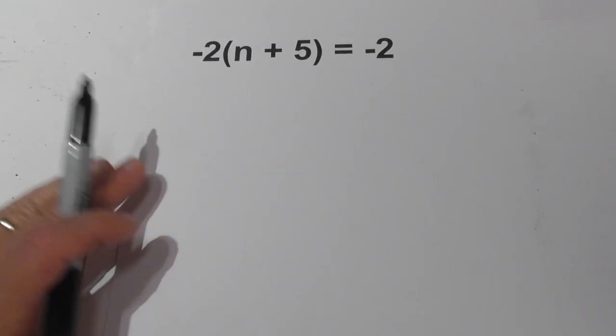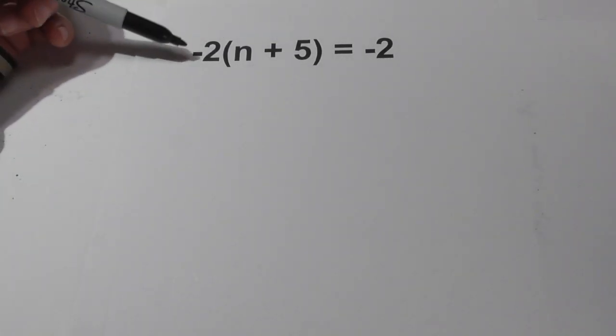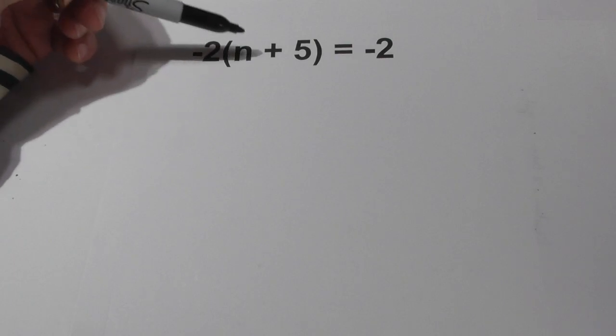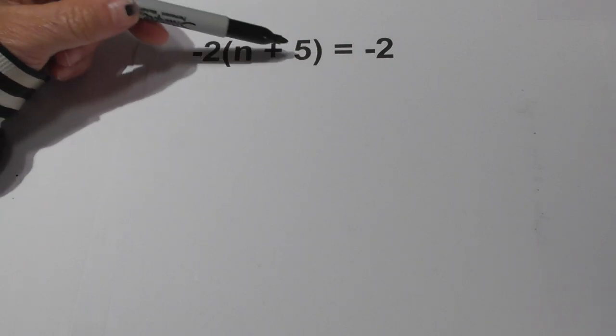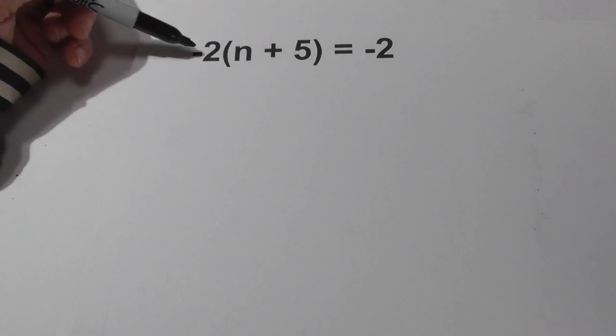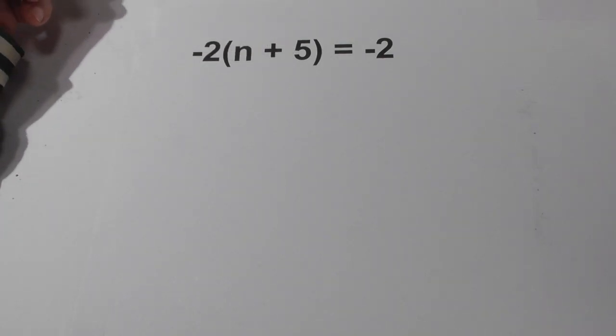Welcome to Moo Moo Math and Science and Solving Two Step Equations. In this equation we have -2(n + 5) = -2. So we have parentheses and then we have negative numbers. Let's get started.